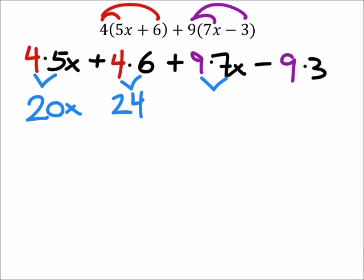If I have 9 sets of 7x's, then I would have 63x's. And 9 times 3 is 27. Of course, we still have the operations between those. So I've got plus, plus, and minus. If any of those had come out negative, then we would have just changed the signs or the operations in between.